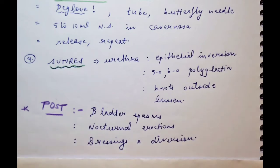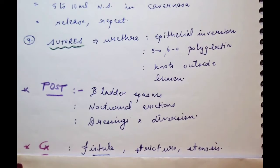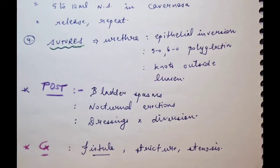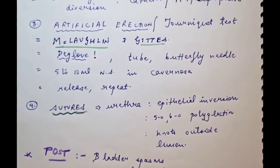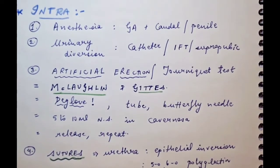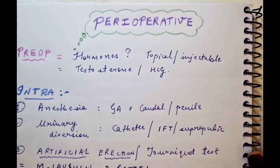The complications are quite common — fistulas are the notorious complications that do take place. Other complications include stricture and stenosis because the urethra lining is reformed, and when these complications occur again and again the patient ends up as a hypospadias cripple — that is also an important examination question. These were the perioperative considerations for hypospadias; in the following videos the common techniques will be described one by one.